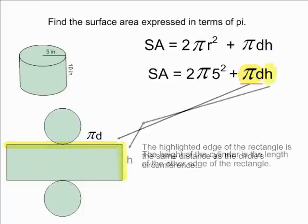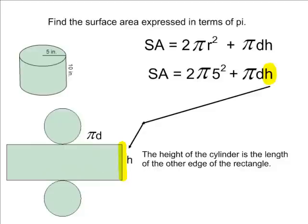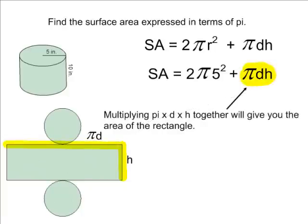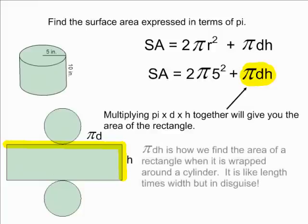And the last term in our equation, the h, is the height of the cylinder, which is the other edge of our rectangle. So multiplying pi times diameter times height is really multiplying the long side of a rectangle by a short side. And we know that when we multiply the long side of any rectangle by the short side of a rectangle, the result will be the area of that rectangle.